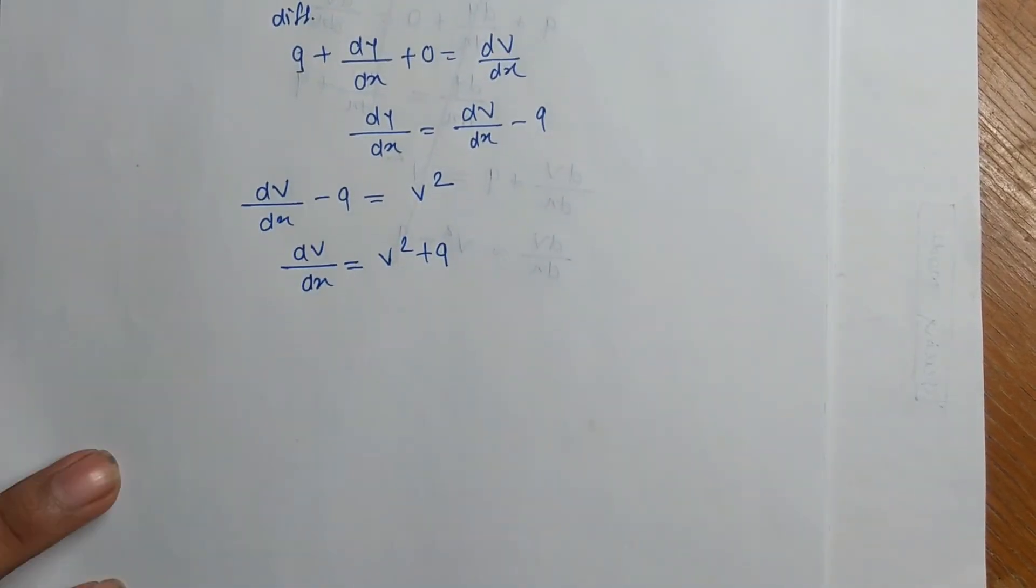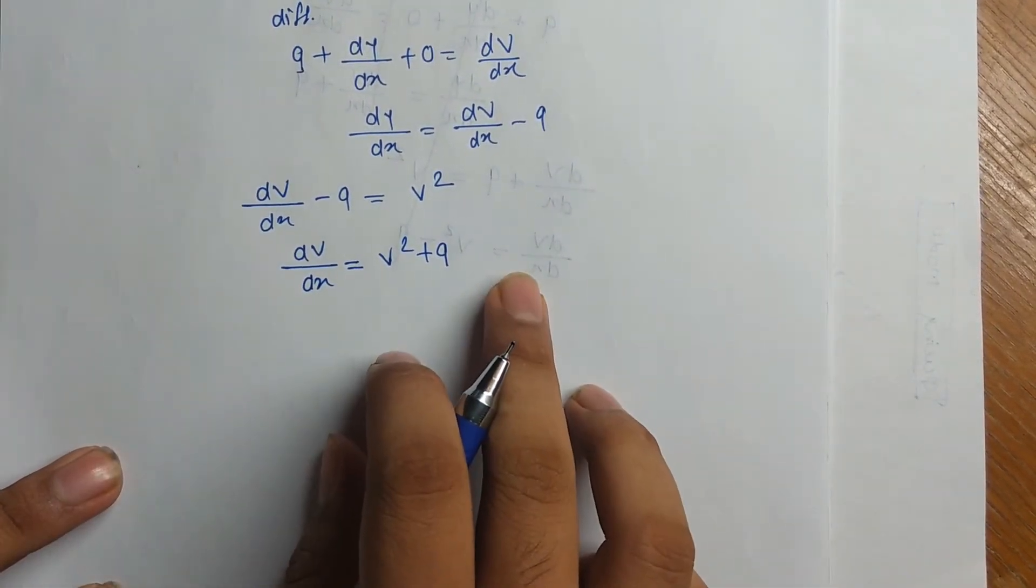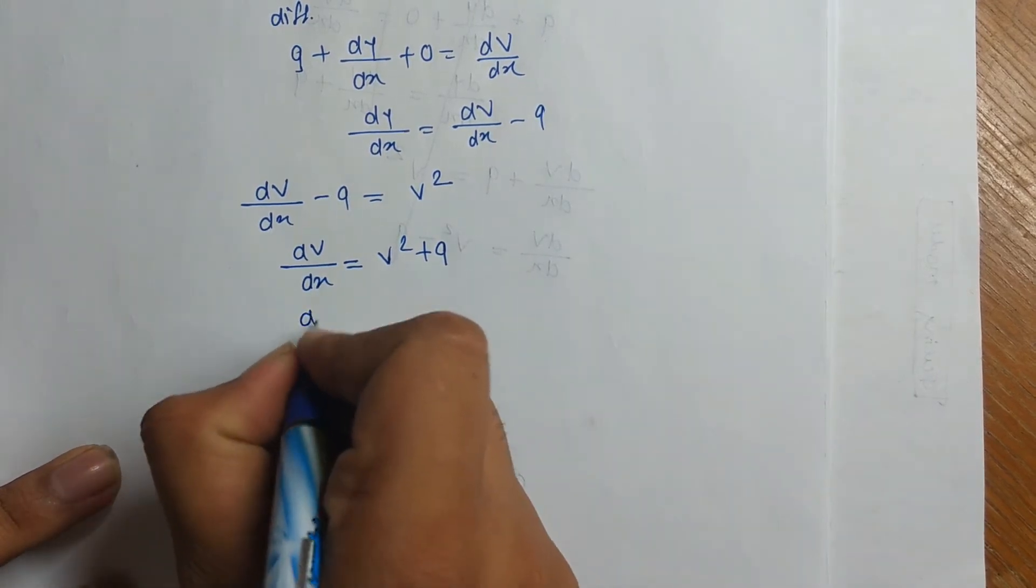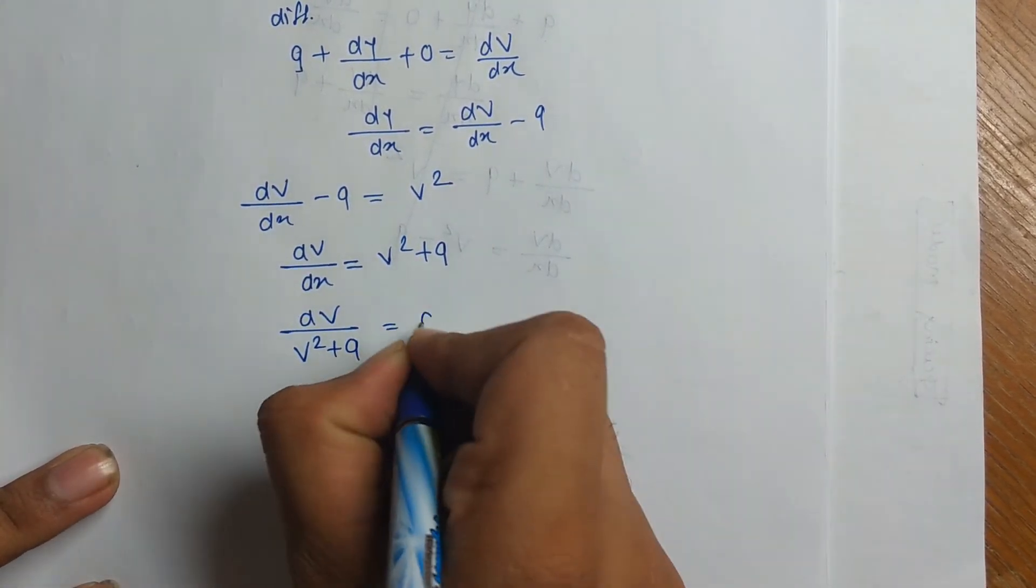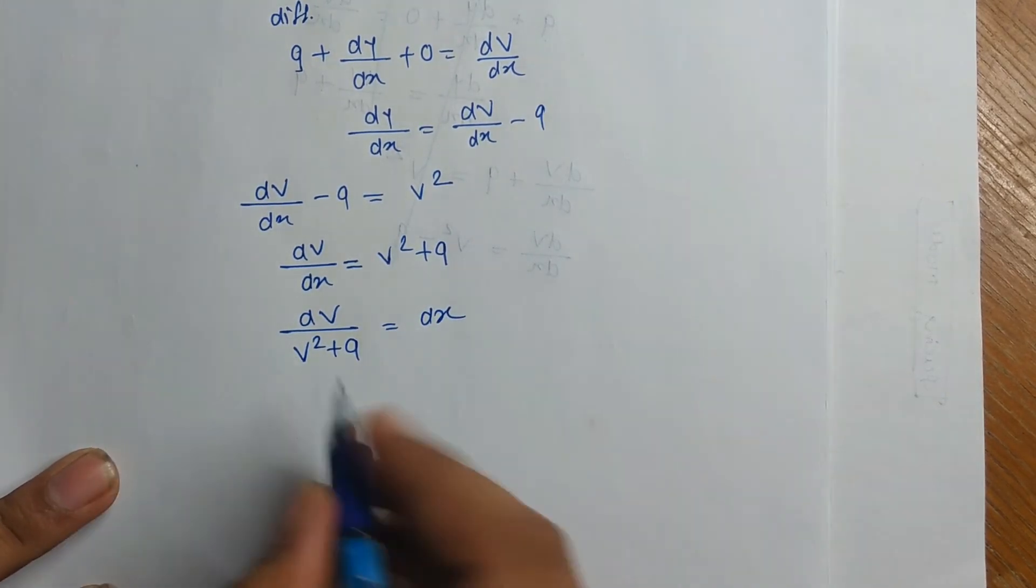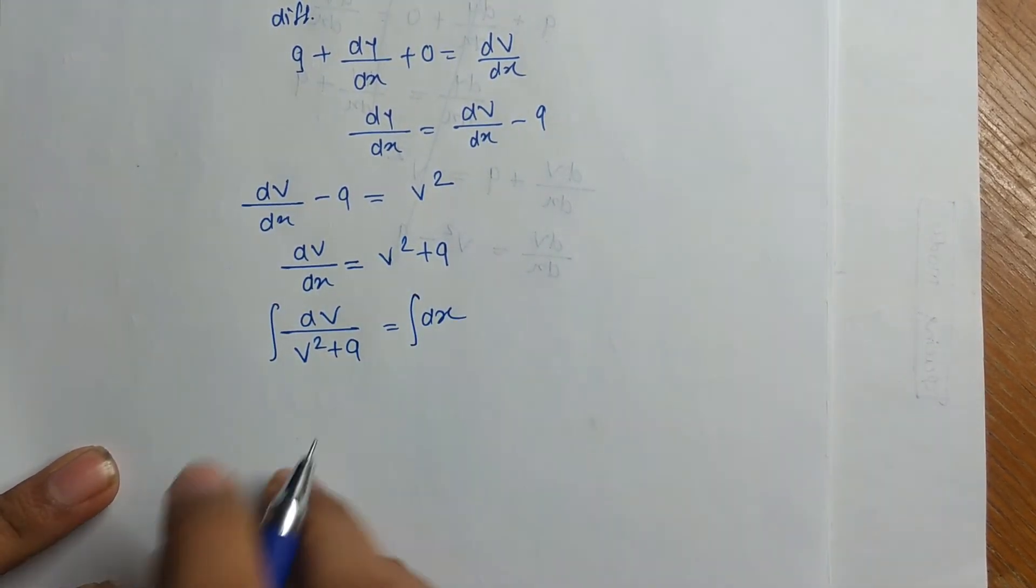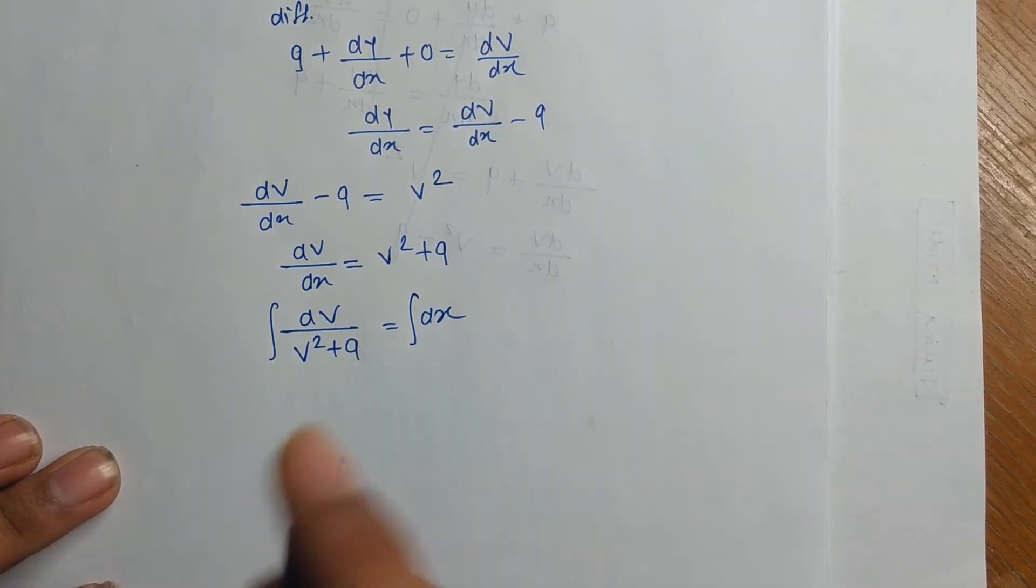Now, we make a variable separation. That will give us dv by v square plus 9 equal to dx. Now integrate this to solve this, find this solution. We integrate this.